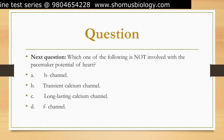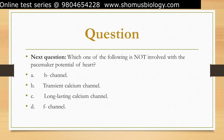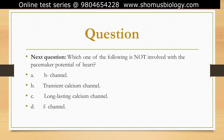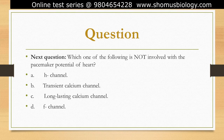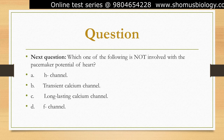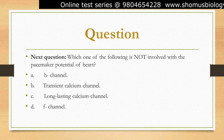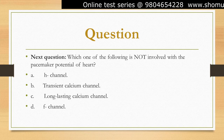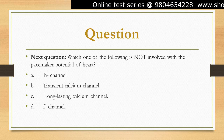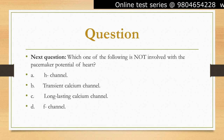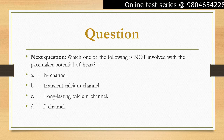The correct answer is option C: long-lasting calcium channel. The pacemaker potential of the SA node is generated by the opening of two types of ion channels — the F-channel and the transient calcium channel. The F-channel is a non-selective channel permeable to both Na⁺ and K⁺. When the F-channel opens, Na⁺ influx exceeds K⁺ efflux, causing depolarization of the membrane potential. The transient calcium channel is a voltage-gated calcium channel that opens when the membrane potential reaches a threshold, and calcium influx further depolarizes the membrane, generating an action potential.